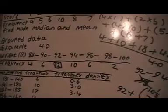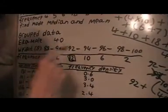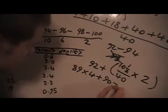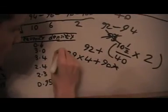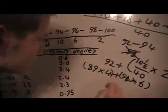And to find the mean, basically what we'll do is kind of the same as what we did before, but what we need to do is we need to take the middle amount. So we'll do 89 times 4, plus 91 times 6...